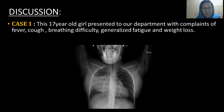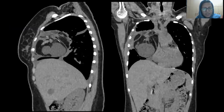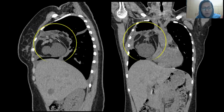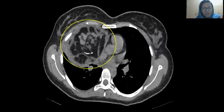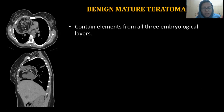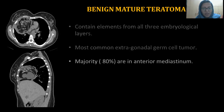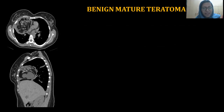Scanograms showed a well-defined homogenous soft tissue density lenticular-shaped mass lesion, broad-based on the mediastinum with loss of the silhouette sign with the cardiac border. CT sections show a well-defined heterogeneous mixed density lesion consisting of fat, calcification, and cystic areas involving the mediastinum on the right side. In view of the mixed densities, we gave the possibility of mature teratoma. Biopsy confirmed benign mature teratoma, which contains elements from all three embryological layers — the most common extragonadal germinal tumor in the anterior mediastinum.